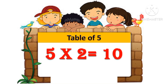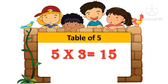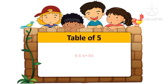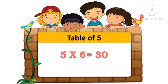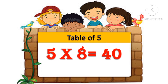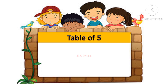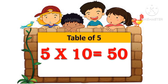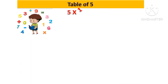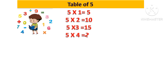5 two's are 10, 5 three's are 15, 5 four's are 20, 5 five's are 25, 5 six's are 30, 5 seven's are 35, 5 eight's are 40, 5 nine's are 45, 5 ten's are 50.